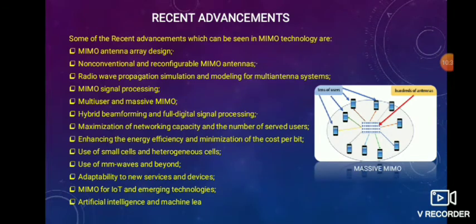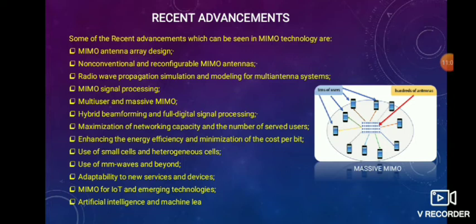These are the recent advancements in MIMO technologies: MIMO antenna array design, non-conventional and reconfigurable MIMO antennas, radio wave propagation simulation, MIMO signal processing, multi-user and massive MIMO, hybrid beamforming and full digital signal processing, maximization of network capacity, number of served users, enhancing energy efficiency, minimization of cost per bit, use of small cells and heterogeneous cells, use of millimeter waves and beyond, adaptability to new services and devices, artificial intelligence and machine learning, and MIMO for IoT and emerging technologies.